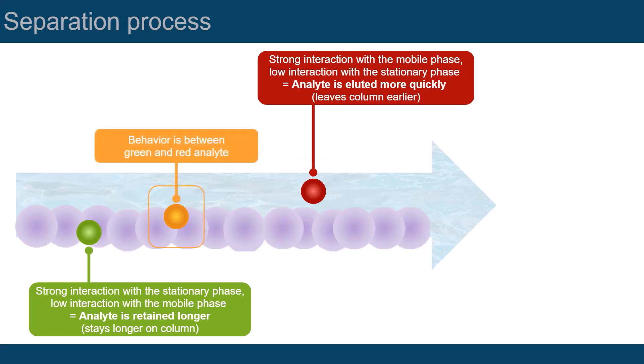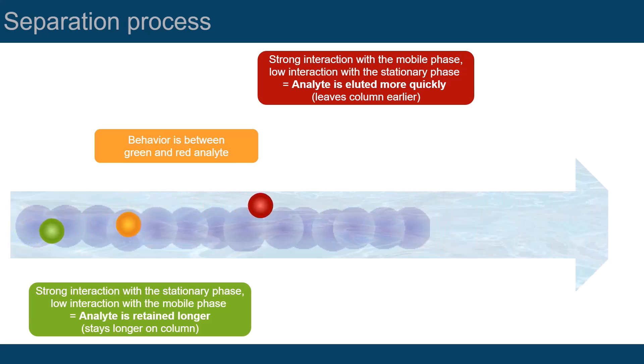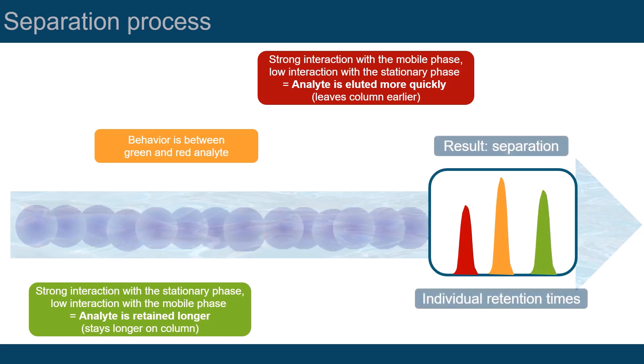The behavior of the orange analyte is between that of the green and red analytes. Now let's start over the process and see what happens to the three analytes. Based on their molecular property, the sample compounds will be retained for various amounts of time. The analytes are therefore separated and detected one after the other. That is, the analytes are separated by their individual retention time.